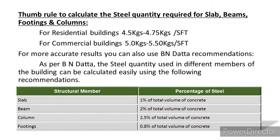Thumb rules to calculate the steel quantity required for slabs, beams, footings, and columns: for residential buildings, 4.5 kg to 4.75 kg per square foot; for commercial buildings, 5 kg to 5.5 kg per square foot. For more accurate results, you can also use BN data recommendations to calculate steel quantity in different members.